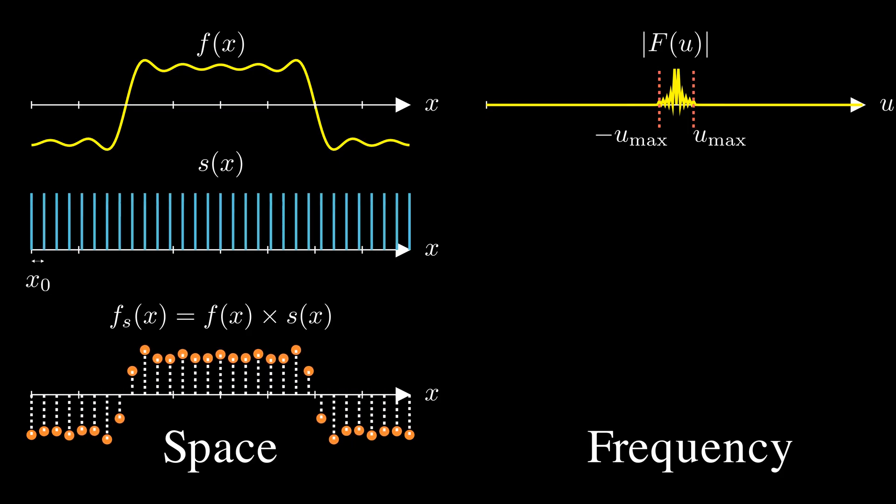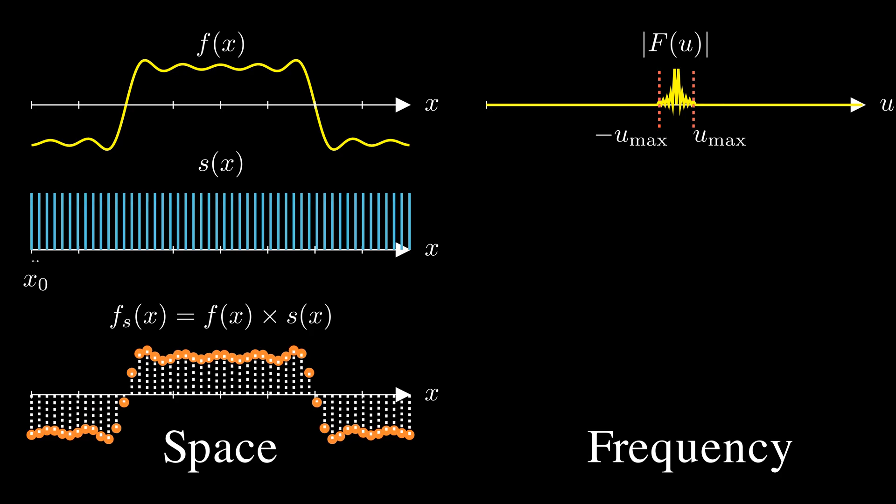But what does the Fourier transform of an impulse train look like? Interestingly, it's also an impulse train, but in the frequency domain. The spacing in the frequency domain is inversely related to the spacing in the spatial domain. This inverse relationship means that with denser sampling in the spatial domain, we have a larger spacing in the frequency domain.